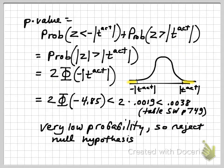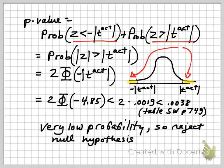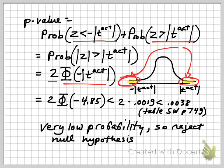We're looking at the probability that the standard normal variable is less than the negative of the absolute value of the t-statistic, or greater than the absolute value of the t-statistic — in other words, the probability of falling into either of these two tails. Since the normal distribution is symmetric, that probability is just two times the probability of being in the lower tail, which corresponds to the negative of the t-statistic. So we have two times the probability that Z is less than −4.85.